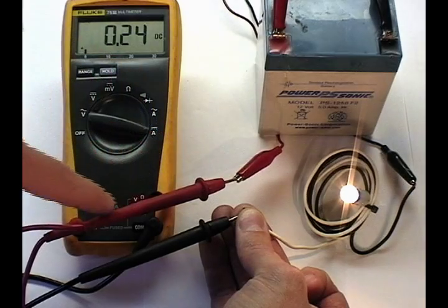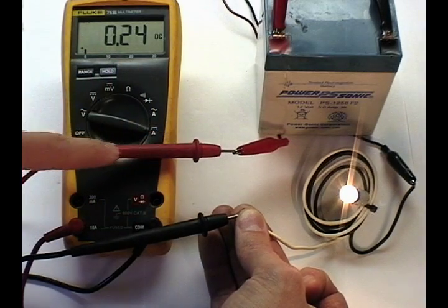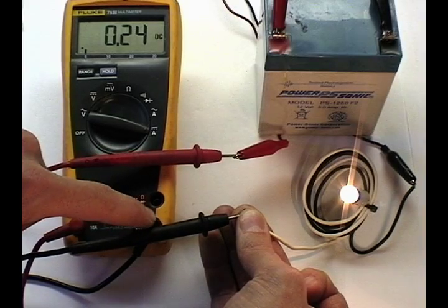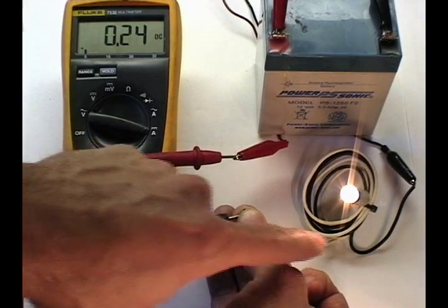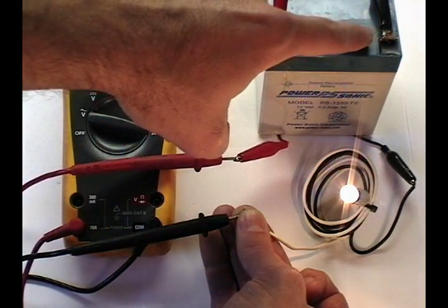Current flows from the positive terminal, through the multimeter, through the measuring circuits inside the meter, through the light bulb, and back to the battery's ground.